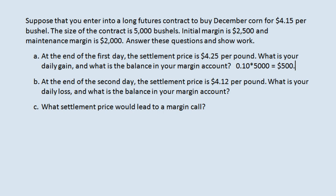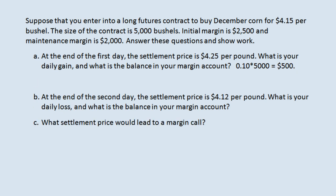What is the balance in your margin account? You started with $2,500 to open the position and you've made $500 in this day, so you now have $3,000. That's a pretty big swing and this is relatively realistic. The reason it's a big swing is that you are only in the position for $2,500 but you're still responsible for that full value of the contract.